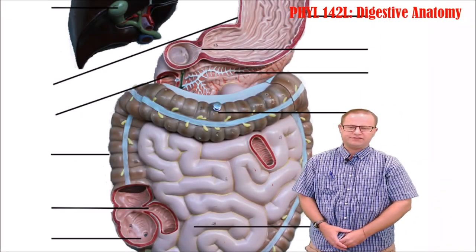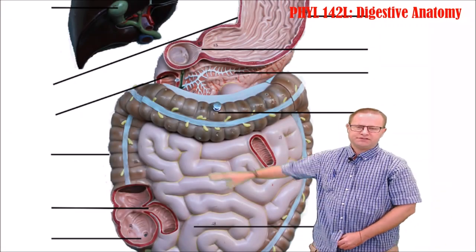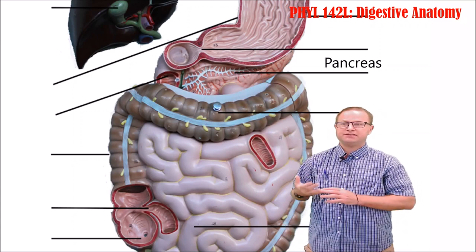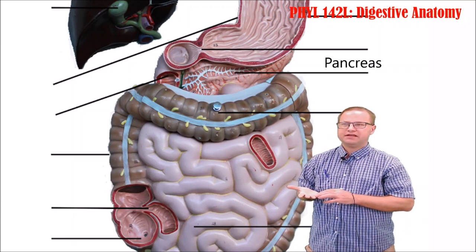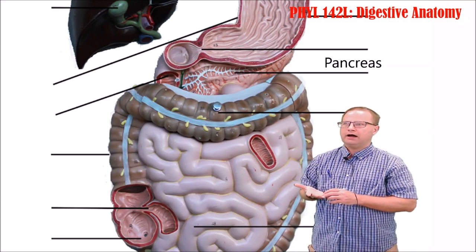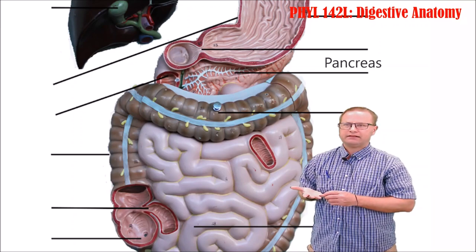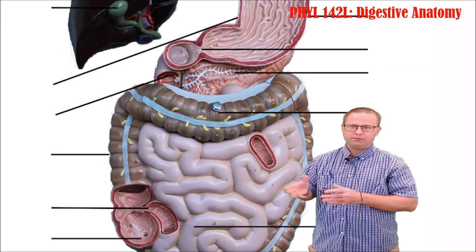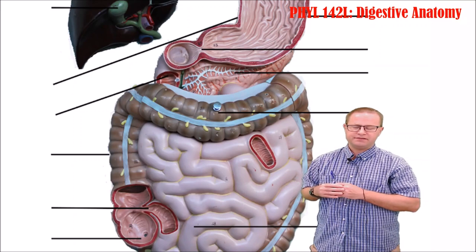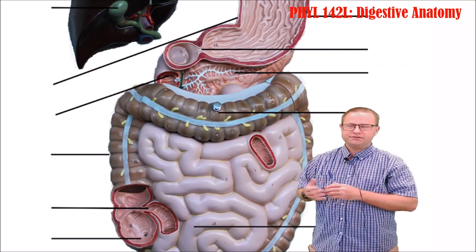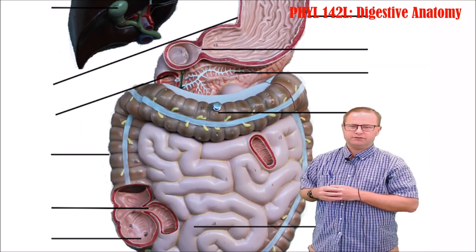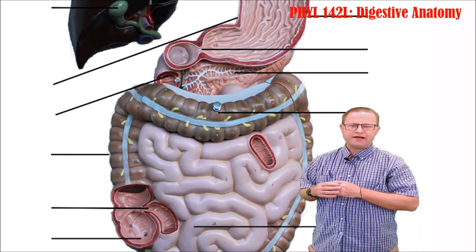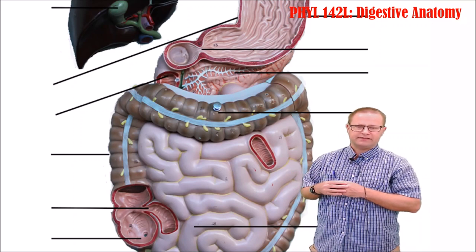Another accessory organ is the pancreas. The pancreas is an exocrine organ that secretes enzymes like pancreatic lipase and other enzymes that help to digest proteins — we'll talk about those in the next module. It also secretes insulin and glucagon. Be able to identify the pancreas; you don't have to identify the ducts of Oddi.